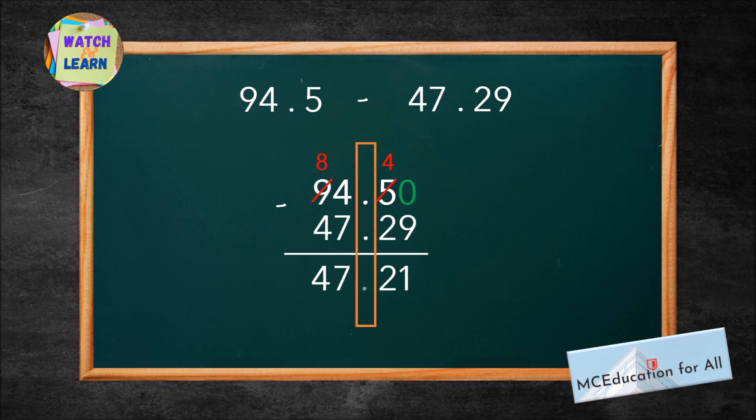Lastly, bring the decimal point straight down. As a result, the difference of 94.5 and 47.29 is 47.21.